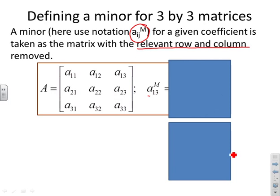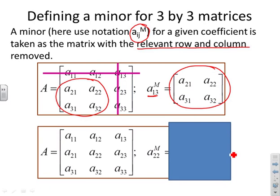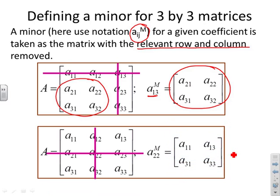What you do is basically remove the relevant row and column — this will be obvious after an example. If I want the minor associated with A13, I cross out the column that A13 is in and the row that A13 is in, and see what's left. That remaining matrix — A21, A22, A31, A32 — is the minor. For A22, I cross the row and column that A22 is in, giving A11, A13, A31, A33. A minor is as simple as that: cross out the corresponding row and column, and the minor is whatever is left.